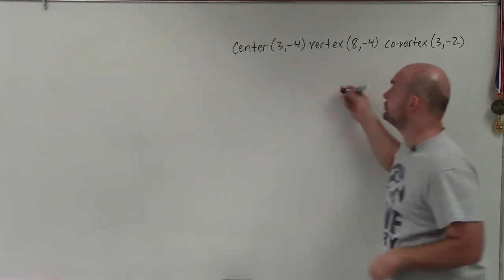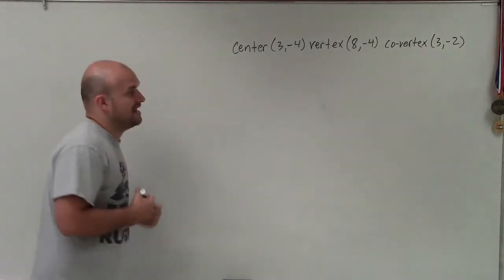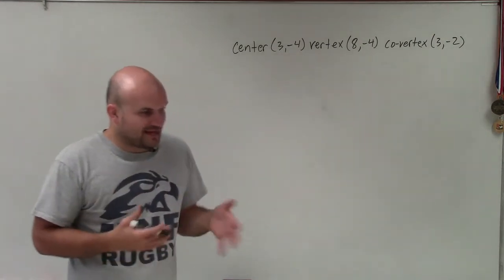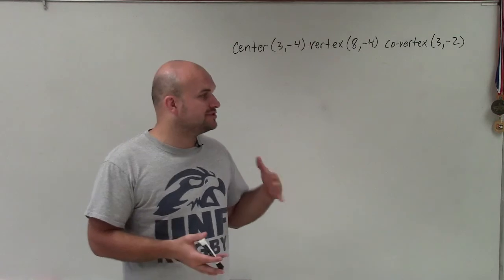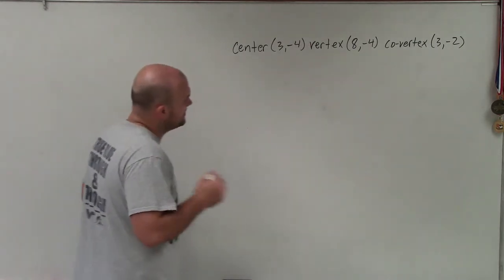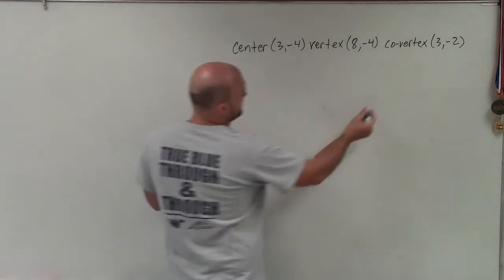Welcome, ladies and gentlemen. What I'd like to do is show you how to write the equation of an ellipse given the center, a vertex, and a co-vertex. To identify the equation of the ellipse, we need to determine whether we have a horizontal or vertical major axis. To understand that, let's graph the information that we have.